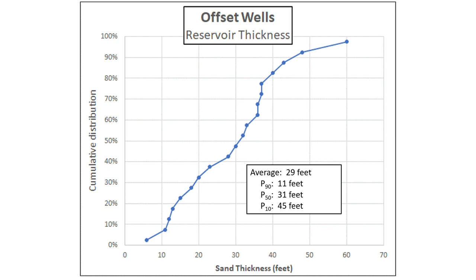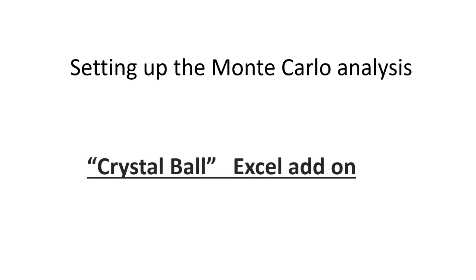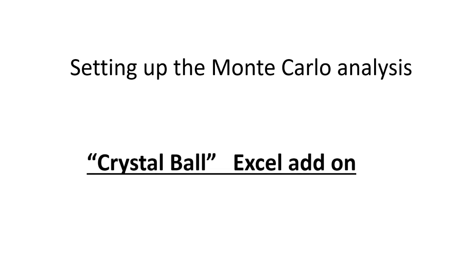We've looked at area and thickness and how you can characterize them. You have to do this for all the other parameters, but we're just going to go over these two. The next thing is to set up the Monte Carlo analysis. To do this we use the Crystal Ball software, which is an Excel add-on that you have to purchase.